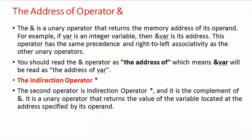The address operator, ampersand, is a unary operator that returns the memory address of its operand. For example, if a variable is an integer variable, then ampersand followed by the variable name gives its address. This operator has the same precedence and right-to-left associativity as other unary operators.